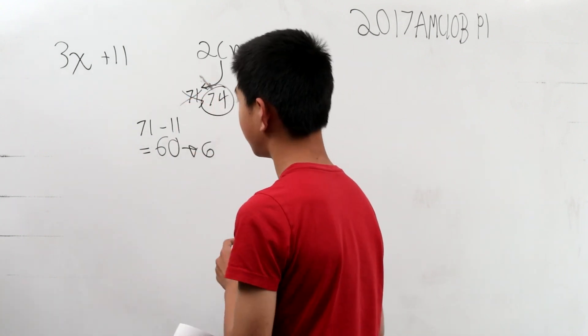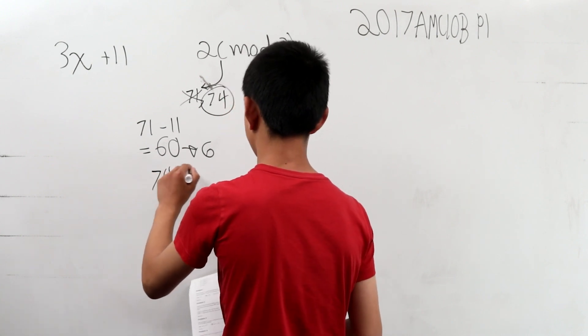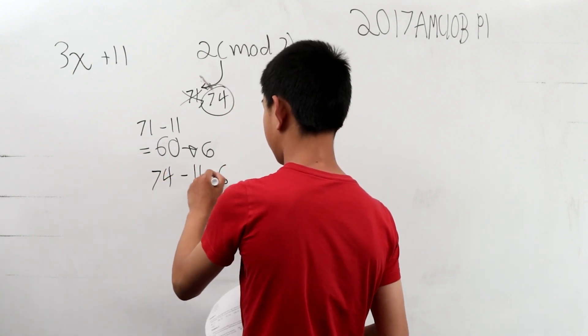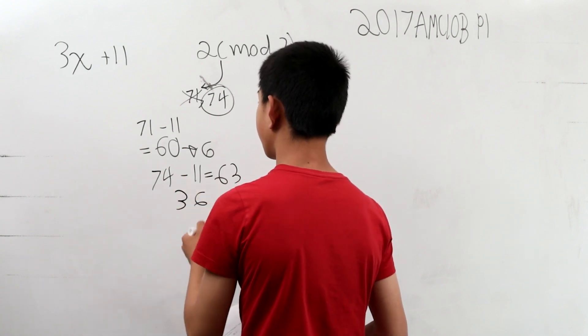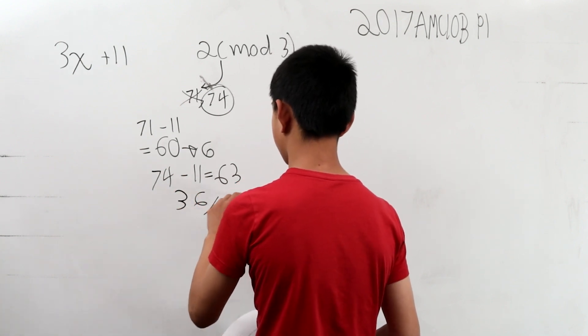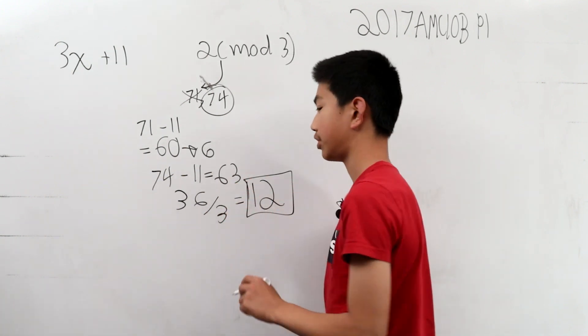And now we can find that 74 minus 11 is 63. Switch the digits to get 36. And then 36 divided by 3 is 12. So our number is 12, and that's the answer.